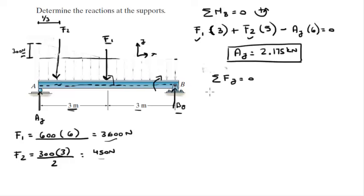So you get F1 going down, you got F2 going down, you got AY going up, and you got BY going up. And that is equal to 0.